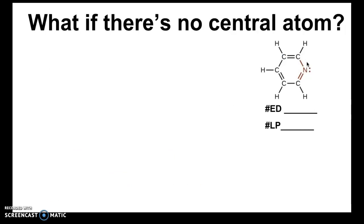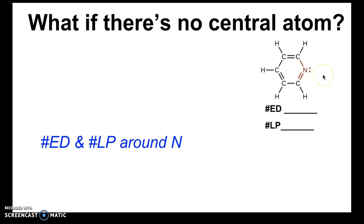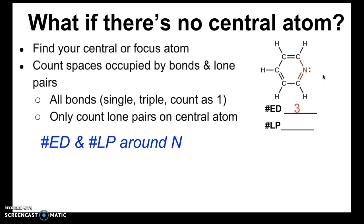Let's look at a case where there's no central atom. In this molecule, we want to count the number of electron domains and lone pairs around the nitrogen — color coded so we know which one we're focusing on. Pause the video now, and when you press play the answer will be revealed. Just focusing on the nitrogen, we have three electron domains and one lone pair. This nitrogen has a single bond, a lone pair, and a triple bond attached to it. I'm only focusing on bonds and lone pairs directly attached to the nitrogen, not any other bonds in the molecule. That gives three electron domains, one of which is a lone pair.